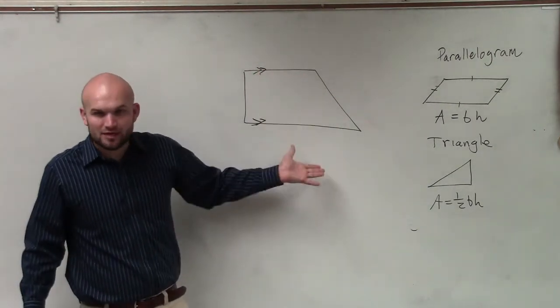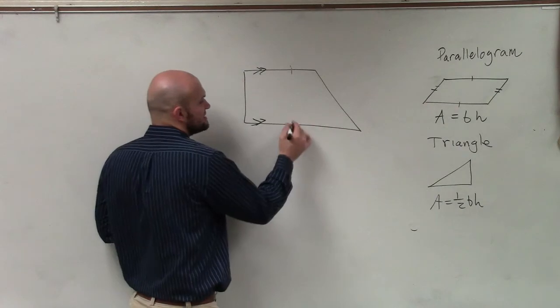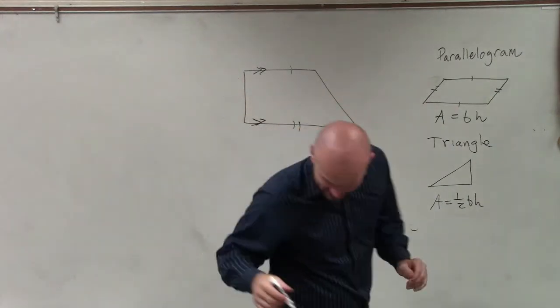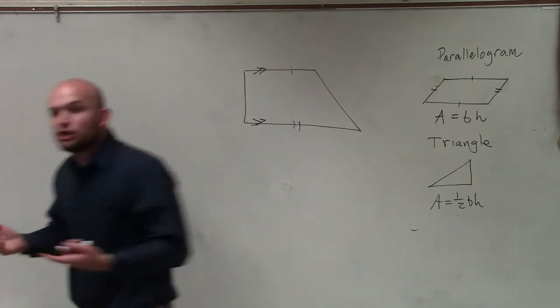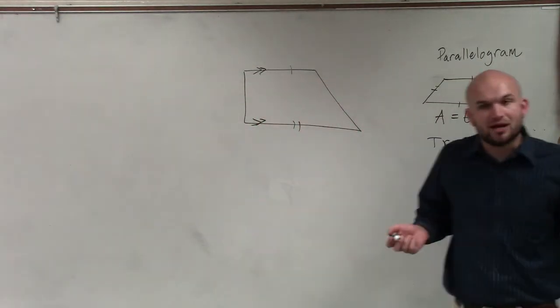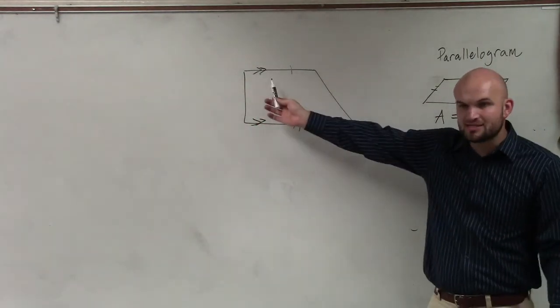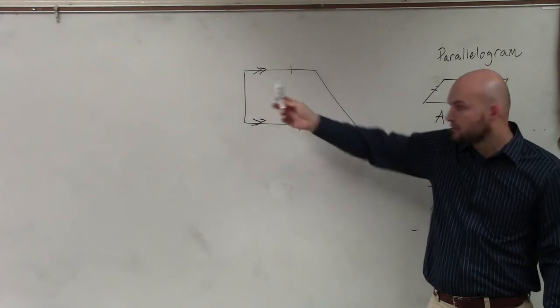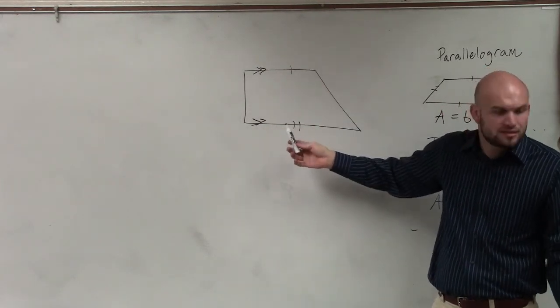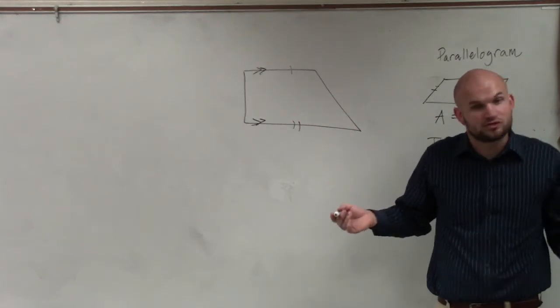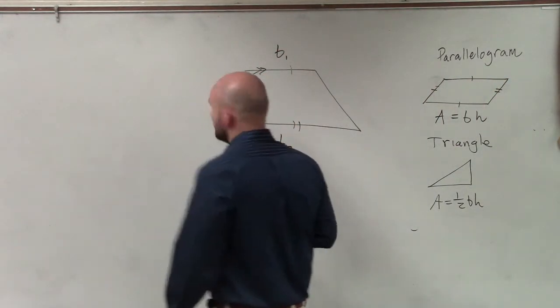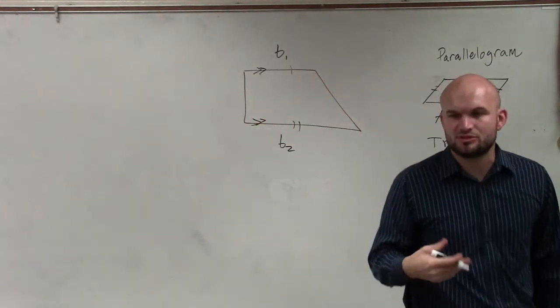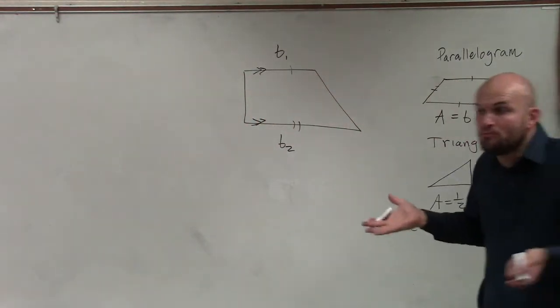These sides do not have to be equal. You can see these are obviously different lengths. When we're determining our base, we know they're parallel. Can I call this the base if I flipped it over? Yes. Can I call this the base just as it is? Right. So we have two bases for a trapezoid. We'll call one base one and the other base two, and we'll use little subscripts to tell the difference between them.